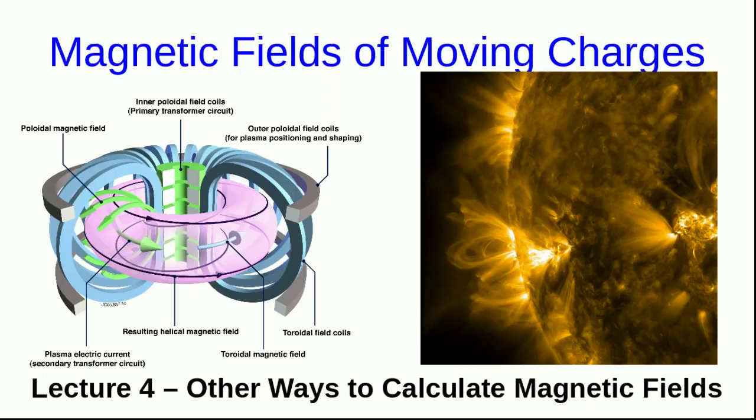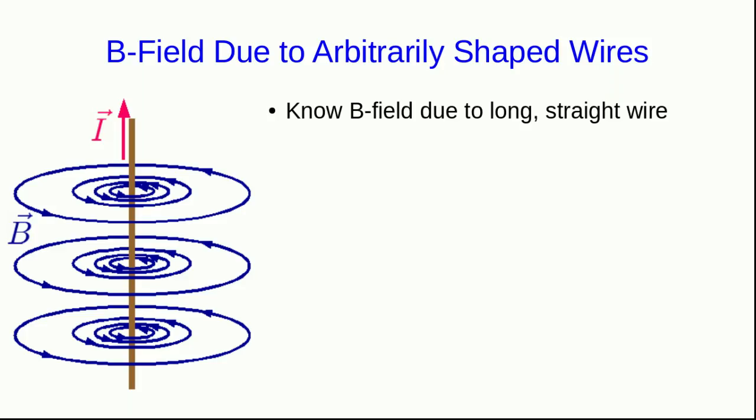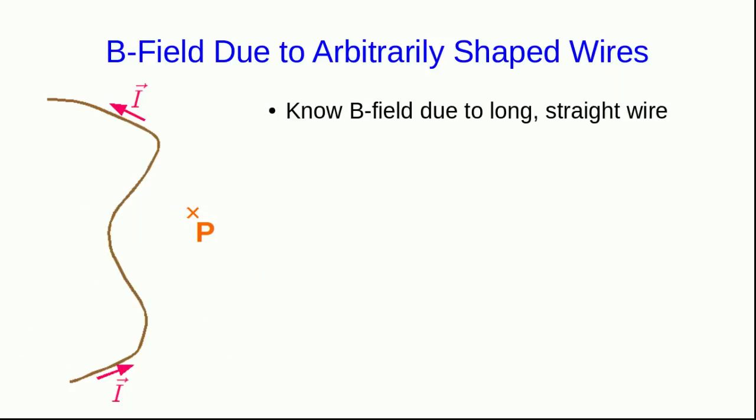Hello, and welcome to Lecture 4 of Magnetic Fields of Moving Charges in Phys 1204. In the last video lecture we saw how to use Ampere's law to get magnetic fields, but that only works for high symmetry situations, so now what we need are some more general methods. We know the B field due to a long straight wire and the solenoid, but what we now need to look at is fields due to more general shapes of wires.